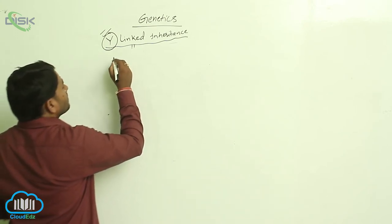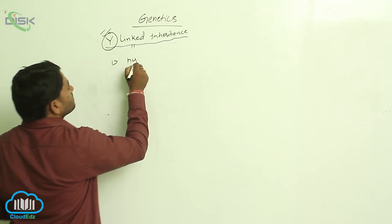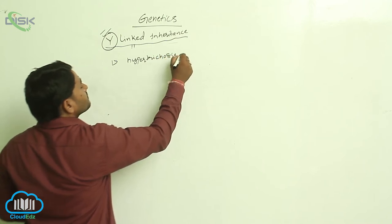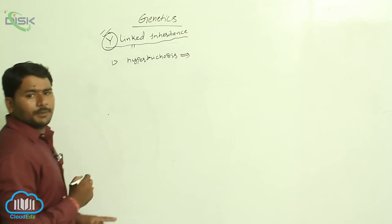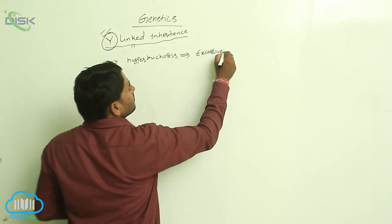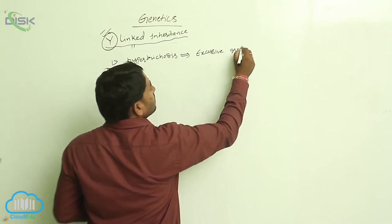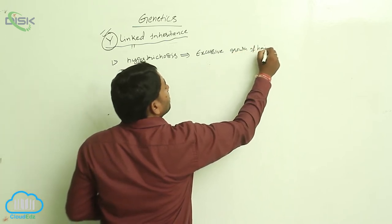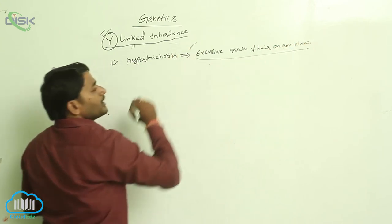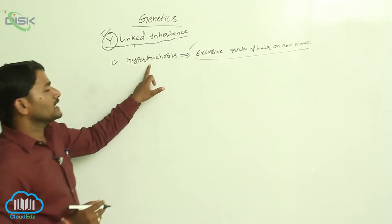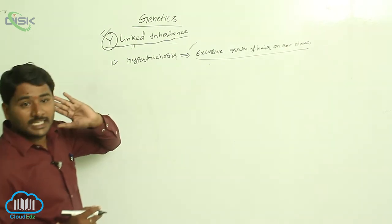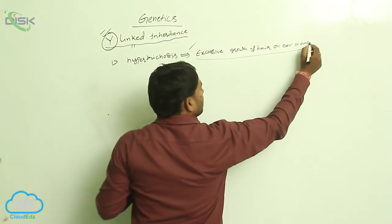The first example is hypertrichosis — excessive growth of hair on the ear pinna. Hyper means more, tricho means hair, so hypertrichosis is the excessive growth of hair on the ear pinna.